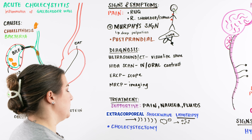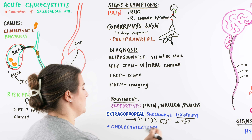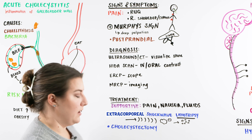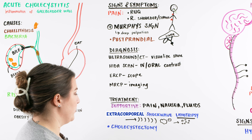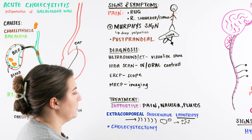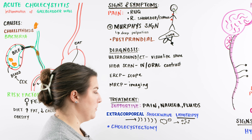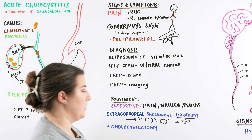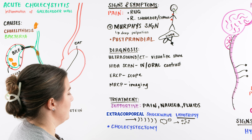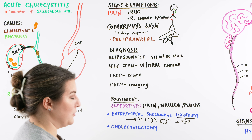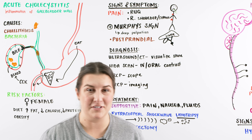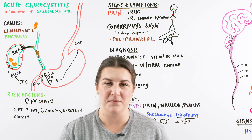And if all else fails, they're going to get a cholecystectomy — their gallbladder is taken out. That's a procedure they plan and schedule for, and hopefully it doesn't have to be emergent. And that is our acute cholecystitis. I hope you guys liked this video — until next time.